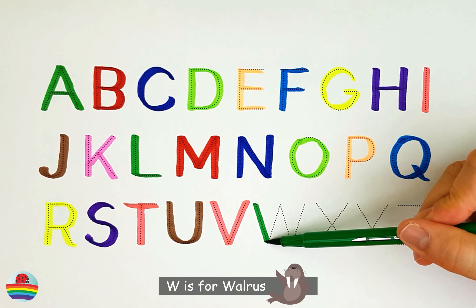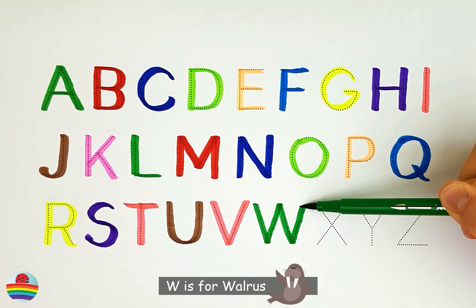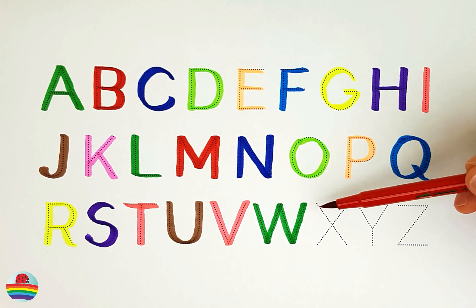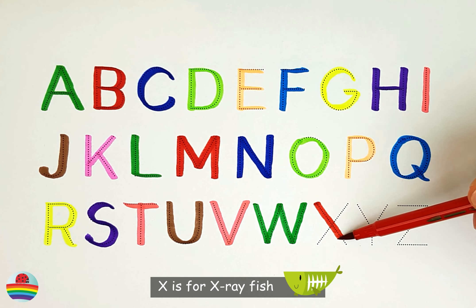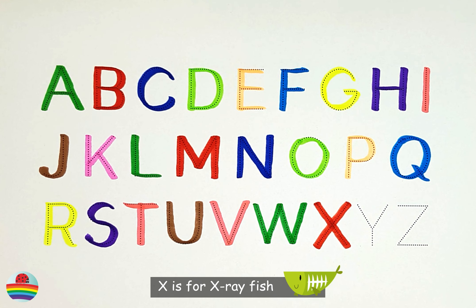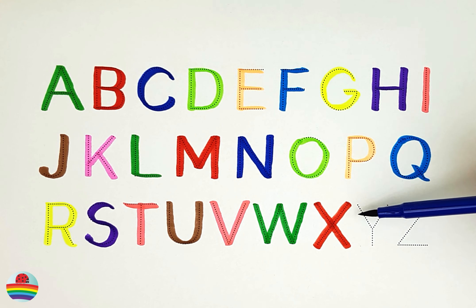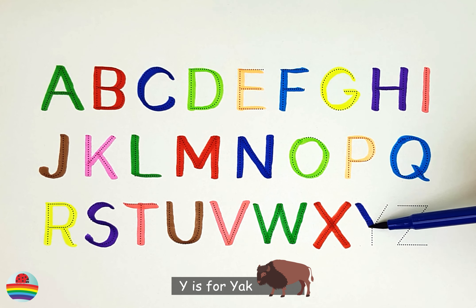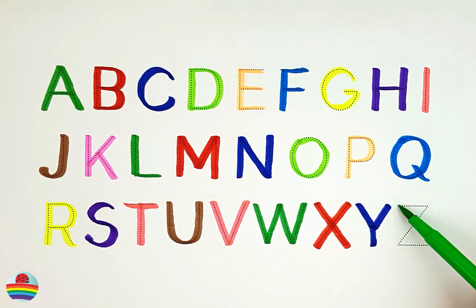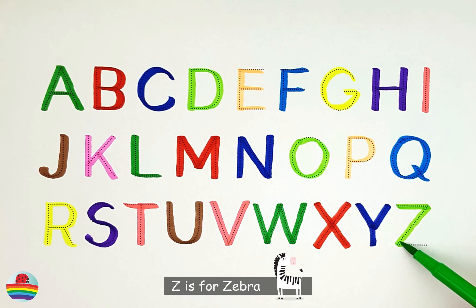W. W is for walrus. W. X. X is for x-ray fish. X. Y. Y is for yak. Y. Z. Z is for zebra. Z.